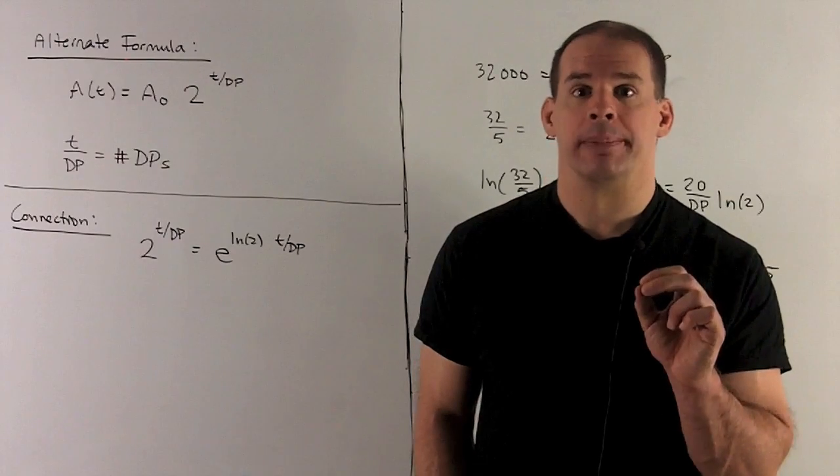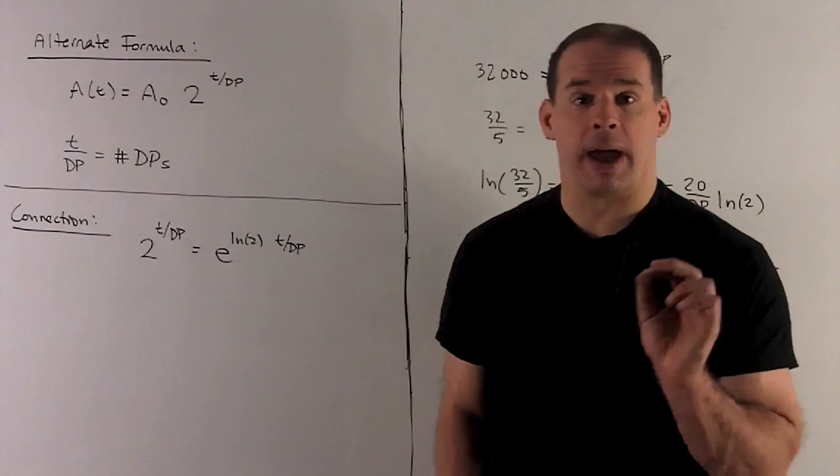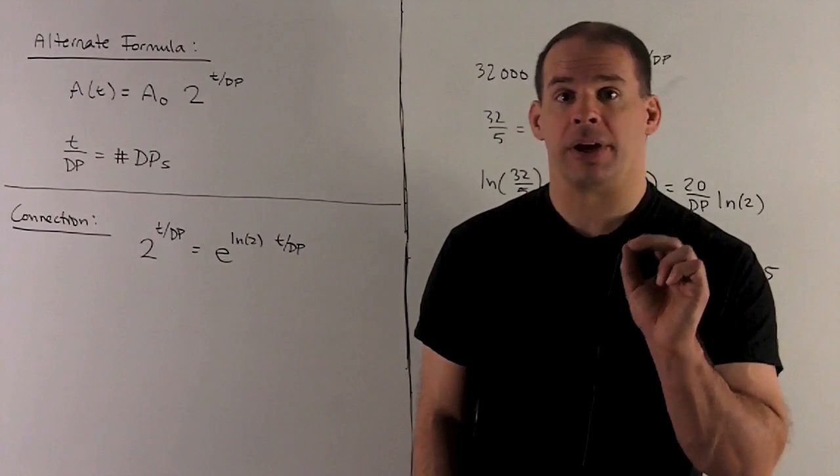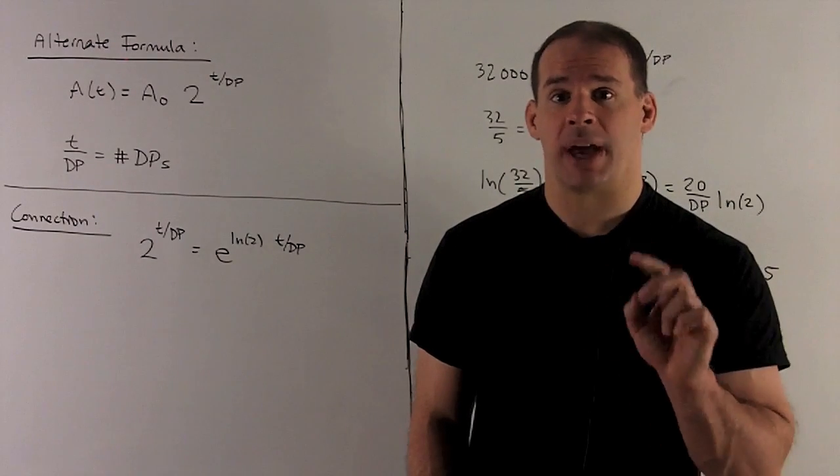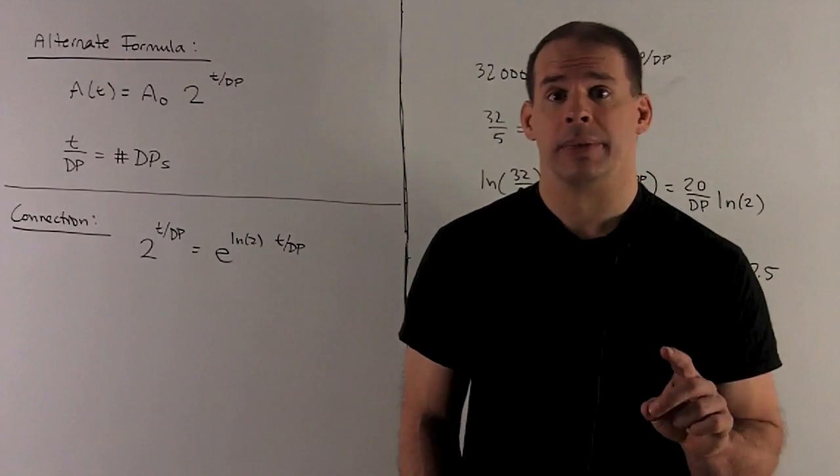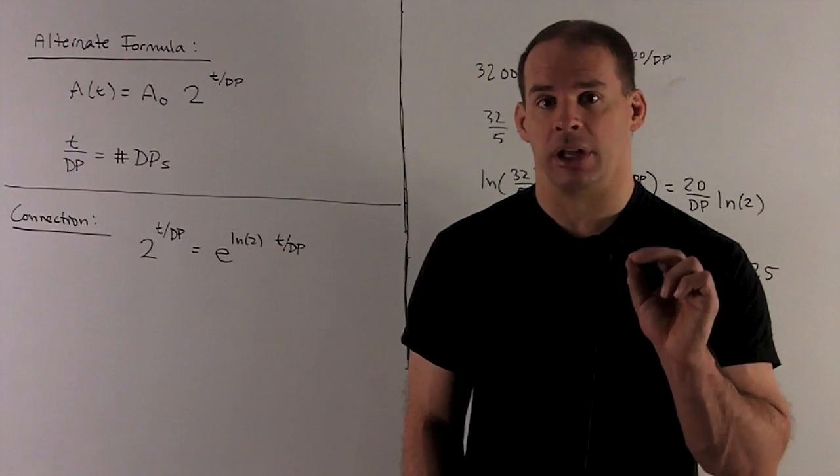So what's happening here is my exponent is counting the number of doubling periods that have passed. So think of it this way: one doubling period passes, the exponent's a one, we double our initial amount. Two doubling periods passed, the exponent's a two, and then we'll have two times two our initial amount, and so on. So it's going to be the same exact formula we had before, except it just looks a little bit nicer.